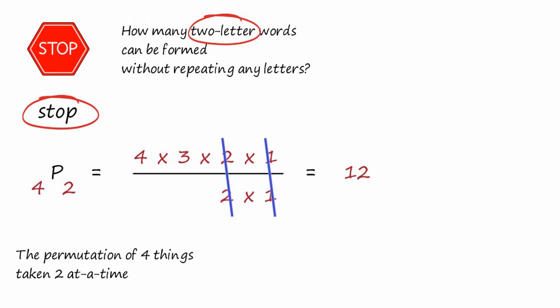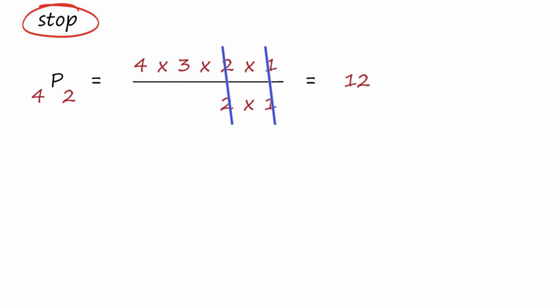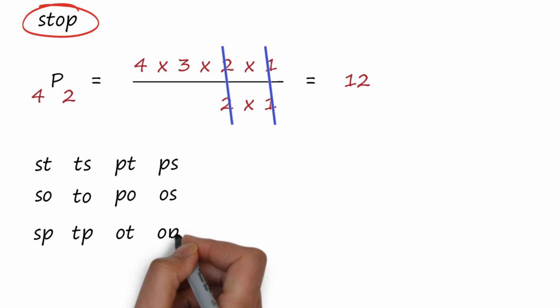And we can check that by actually listing the two-letter words that we can make from the letters in the word stop. We'll just list them. And there they are, the twelve ways.